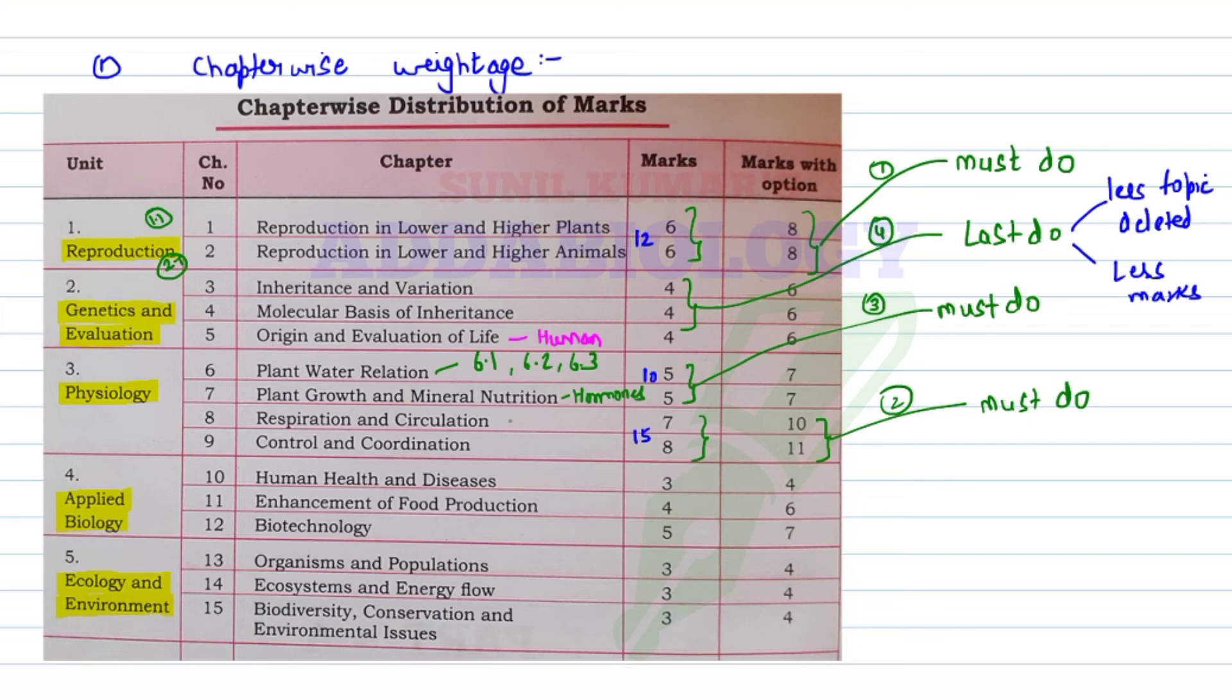Last, you can study evolution - that is only human evolution. When I total up these marks, I get 12 plus 12 plus 10 plus 15, which makes a very decent score. Out of 15 chapters, if you study only these 8 or 9 chapters, you can score at least 49% marks, and 30 marks in practicals gives you 79, so 80% you can easily manage.